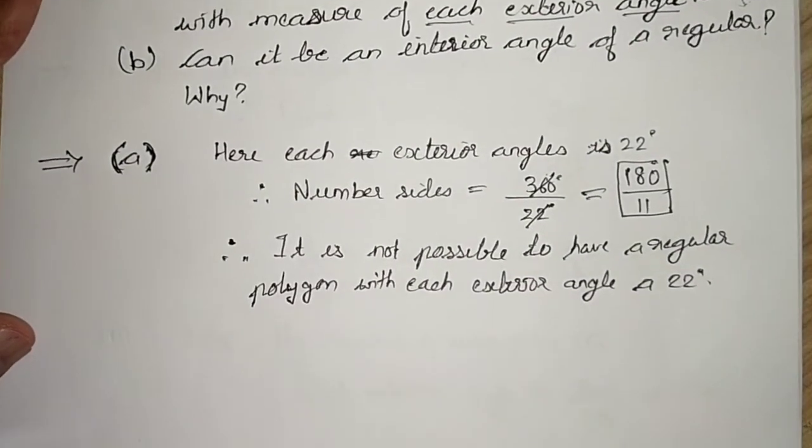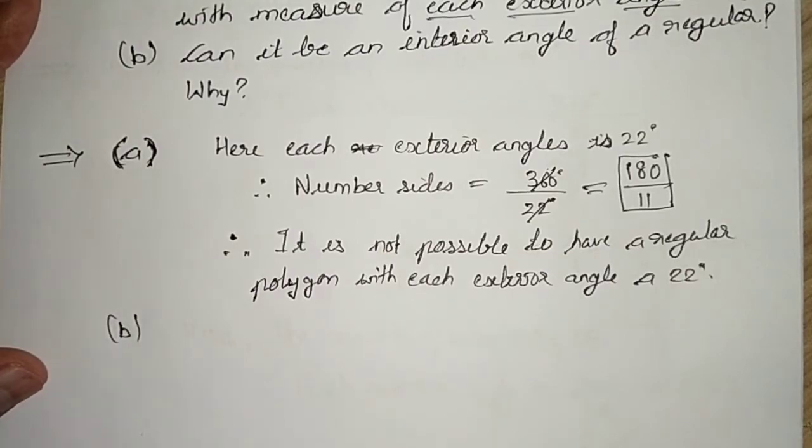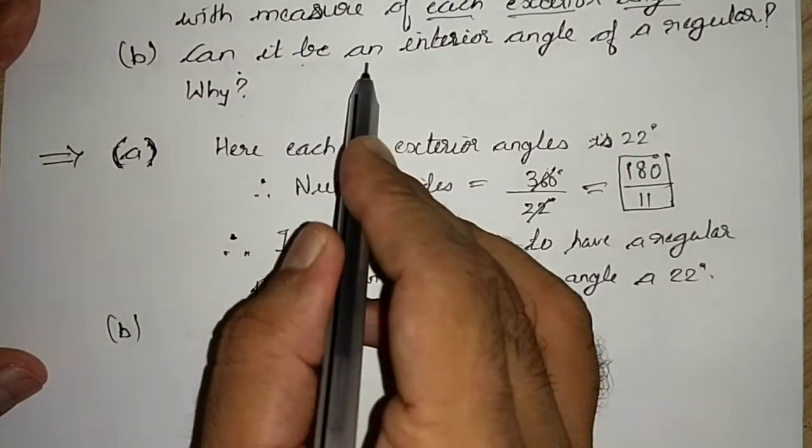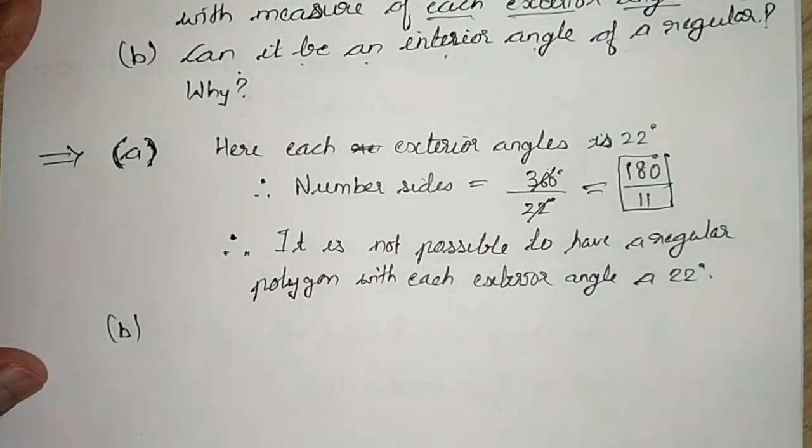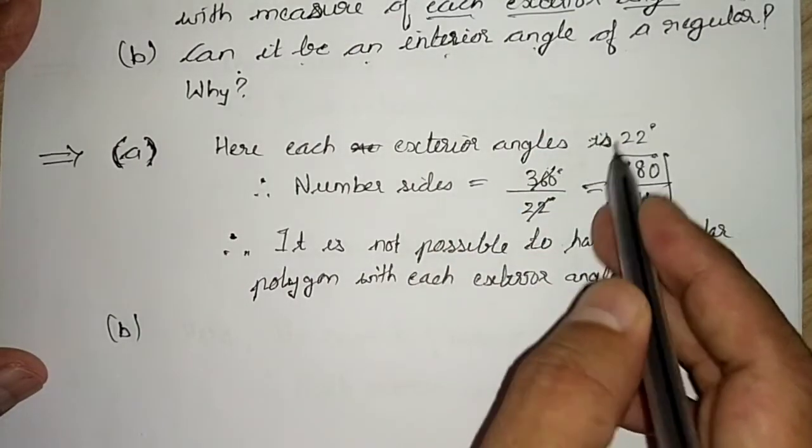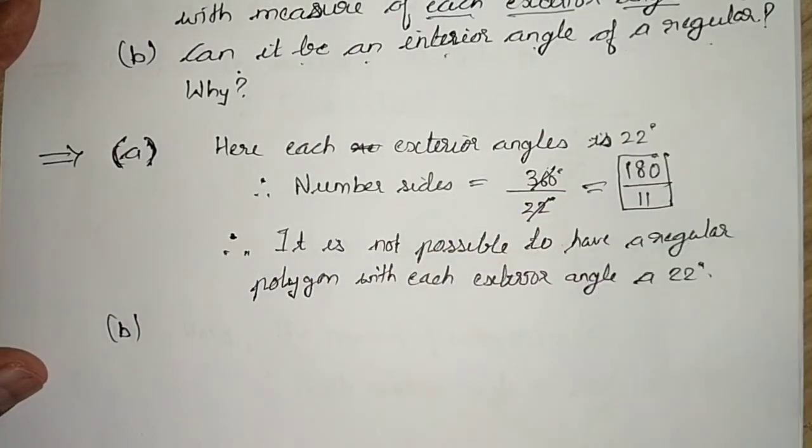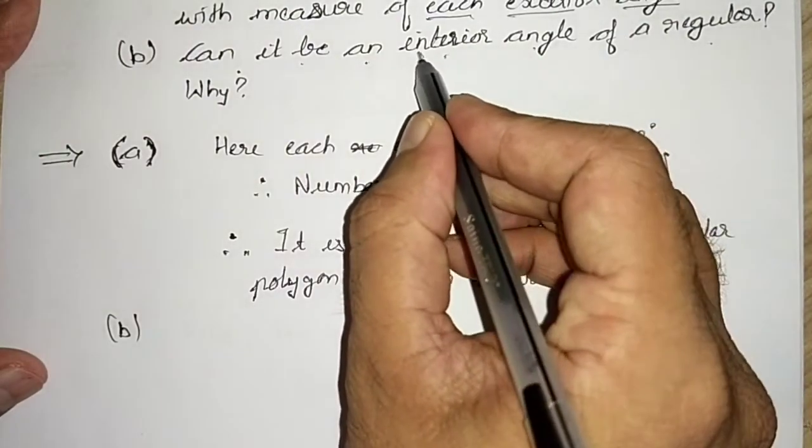Now moving to part B. Part B says, can it be an interior angle of a regular polygon? If not exterior, can it be an interior angle? If the interior angle is 22 degrees, can it be a regular polygon? Again, the same question arrives, but now it is interior angle.